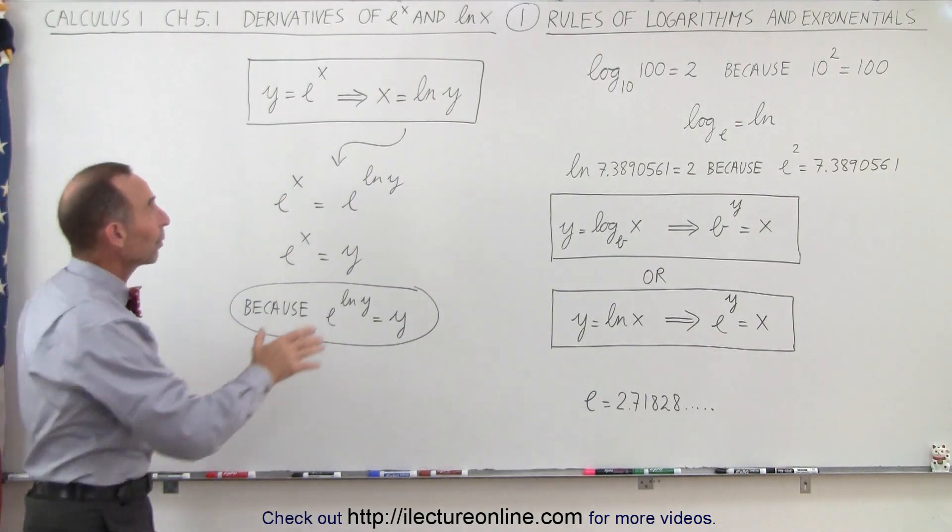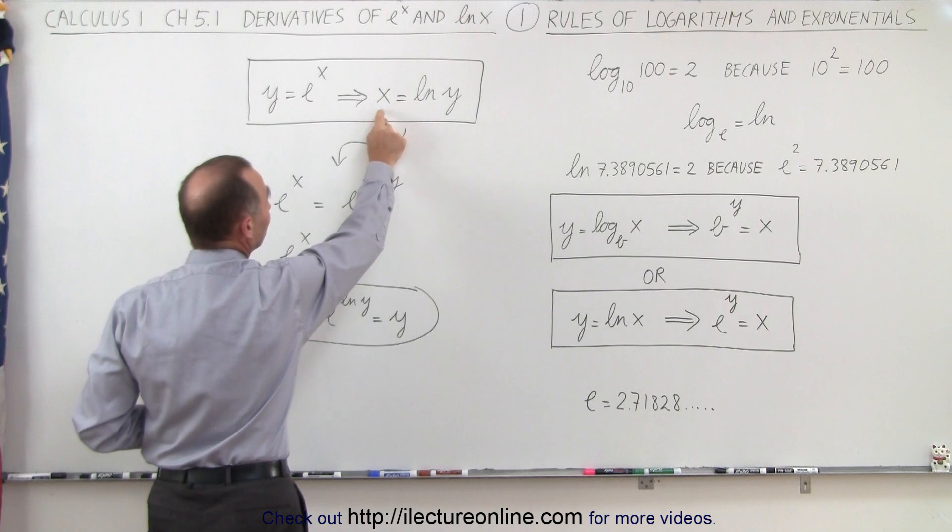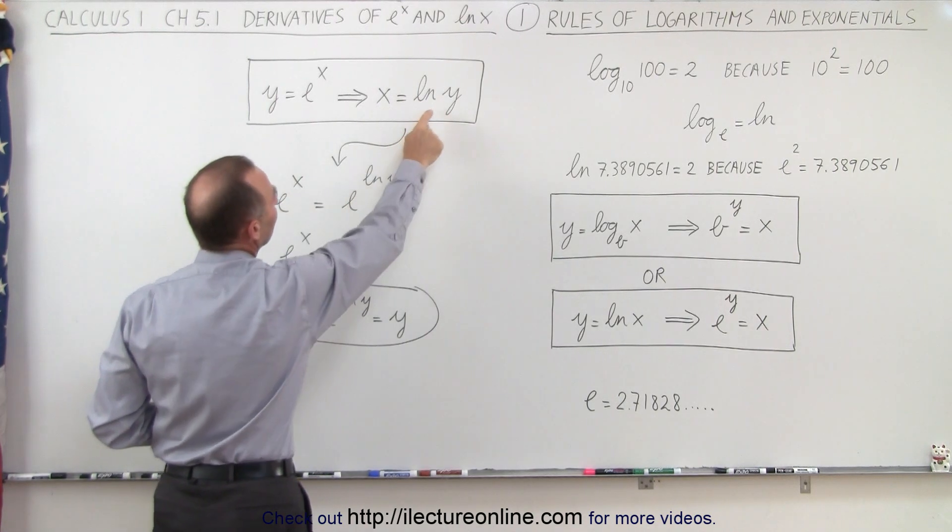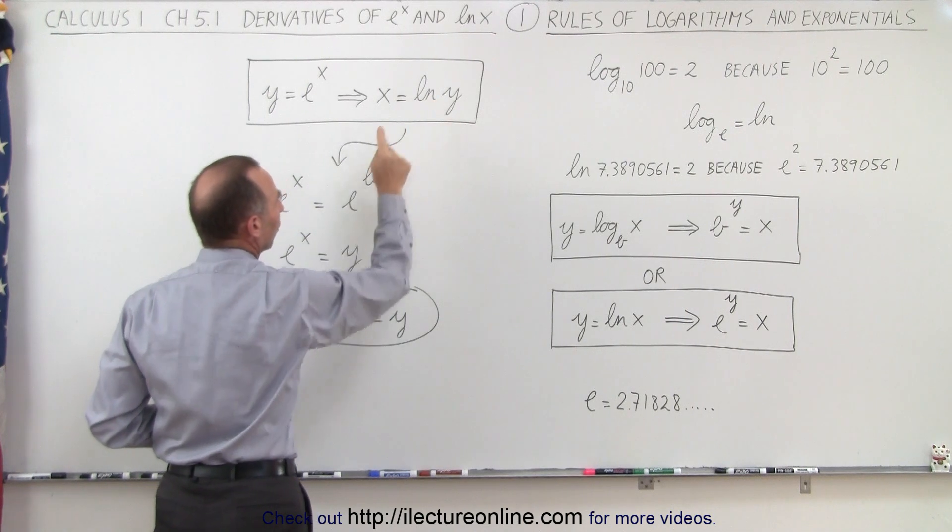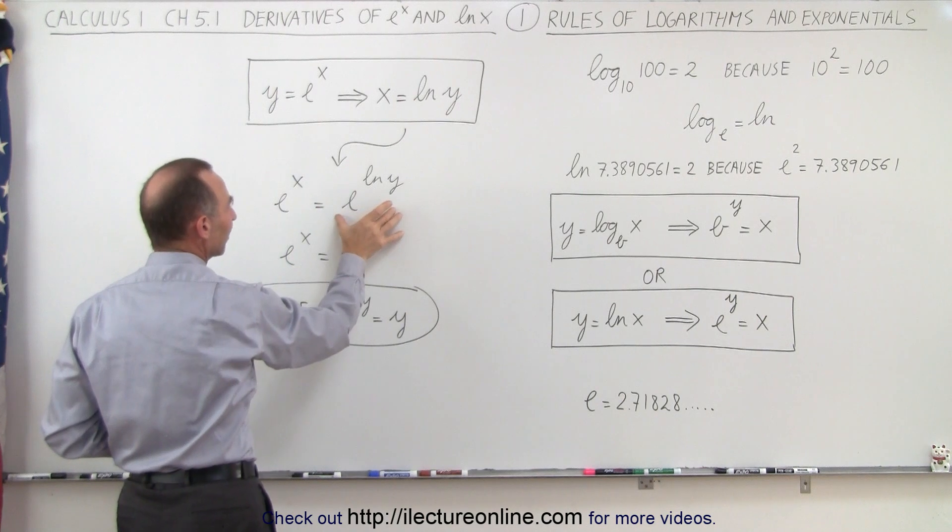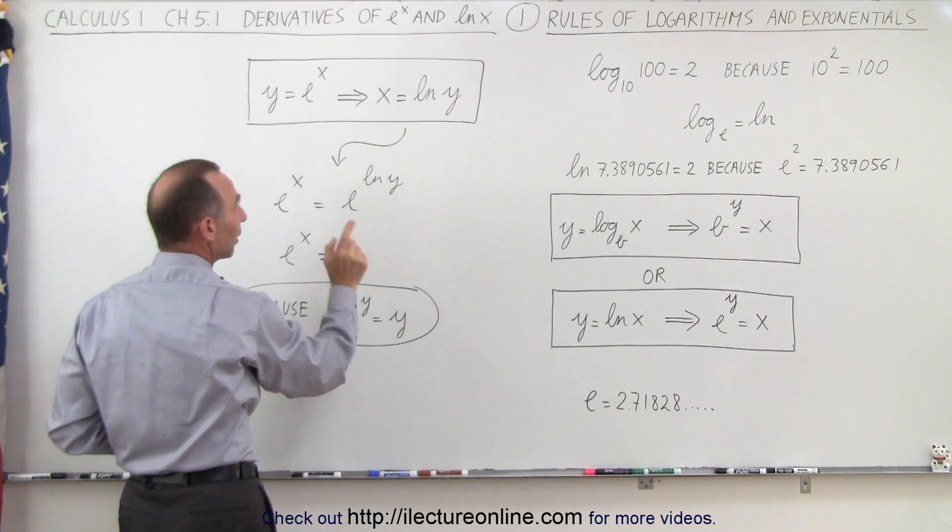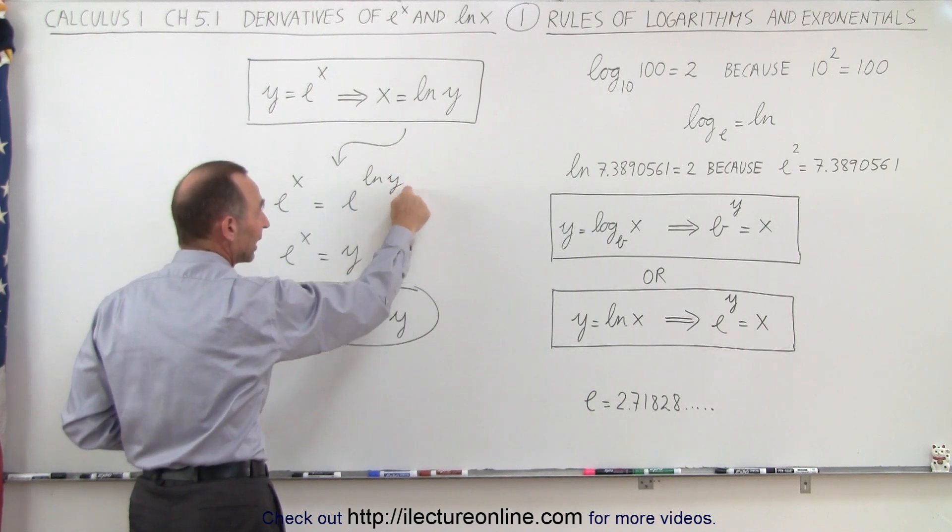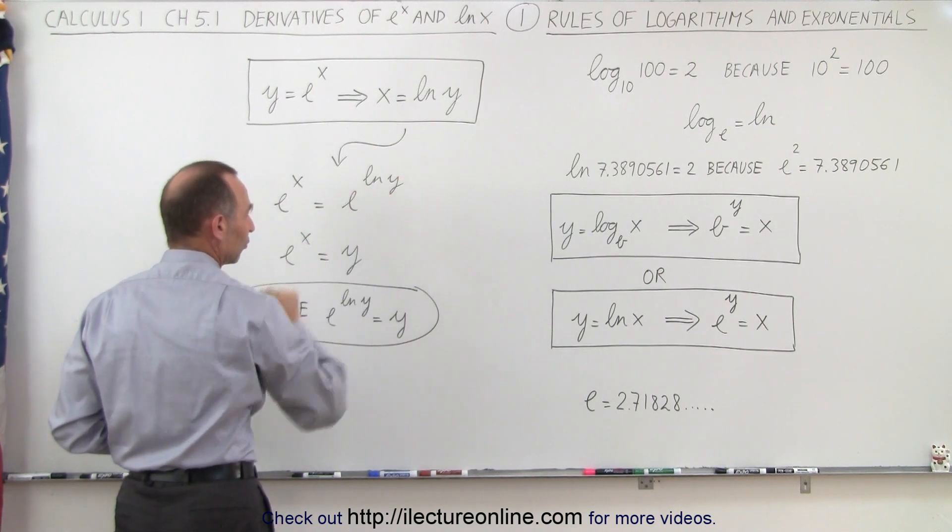If we take the left side of this equation and write it as the exponent of e, and take the right side and write it as the exponent of e, then on the left side we have e to the x, and on the right side we simply have y. Because e raised to the natural log of something, we simply get that something back, in this case y.